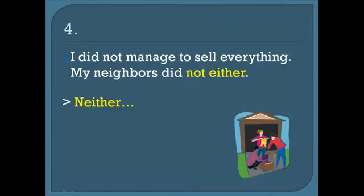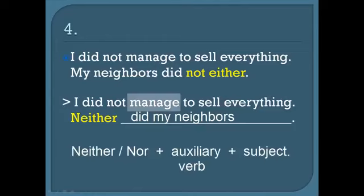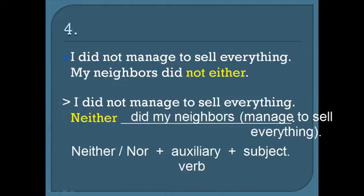Number four: 'I did not manage to sell everything. My neighbors did not either.' Answer: 'I did not manage to sell everything. Neither did my neighbors.' Note this pattern with the use of 'neither' — the main verb is not needed because it's understood from context: 'Neither did my neighbors.'